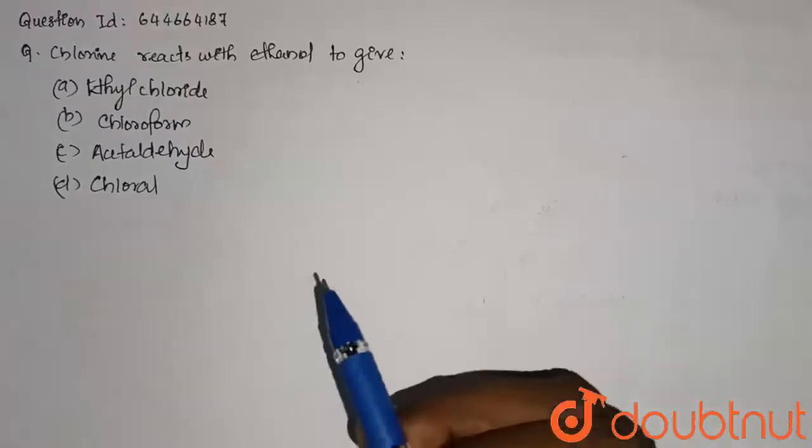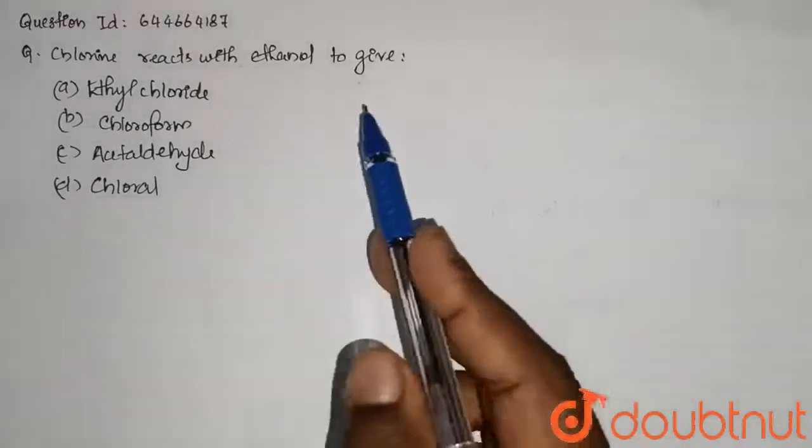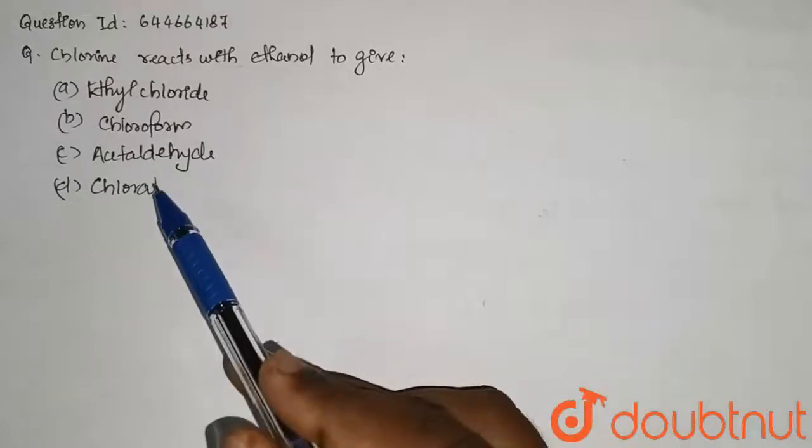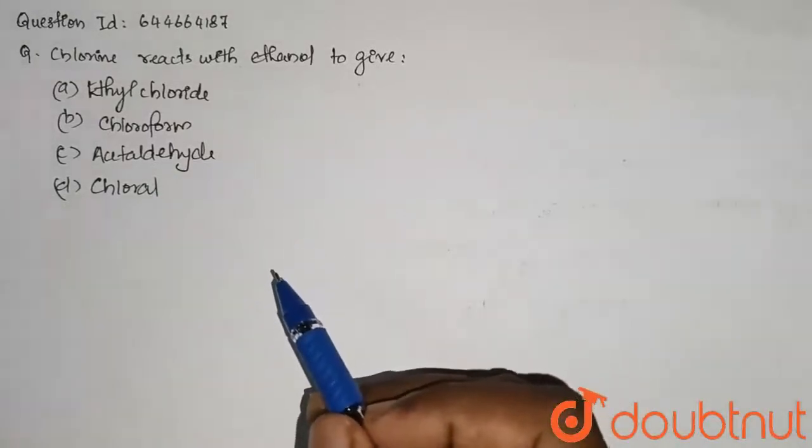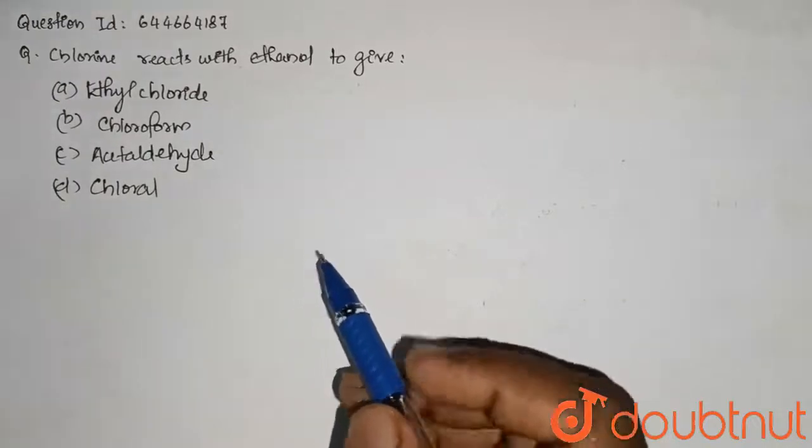So the question here is, chlorine reacts with ethanol to give ethyl chloride, chloroform, acetaldehyde or chloral. So we have to find out what chlorine will give when it reacts with ethanol.